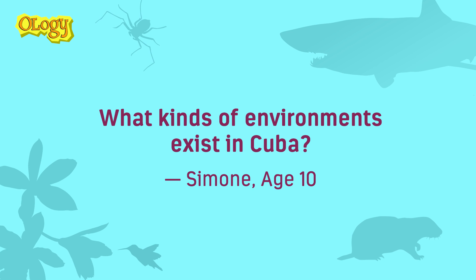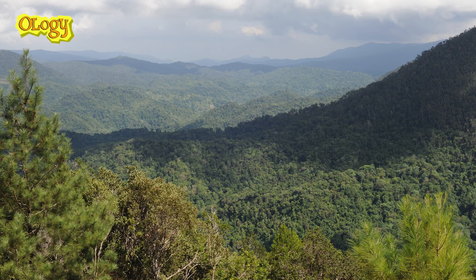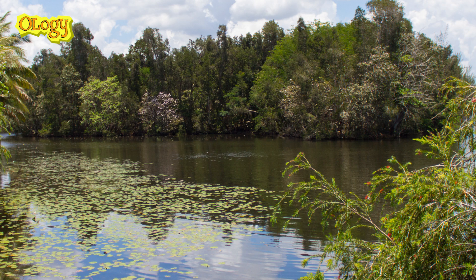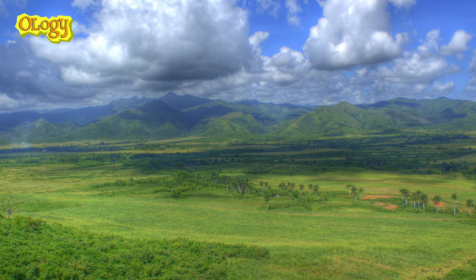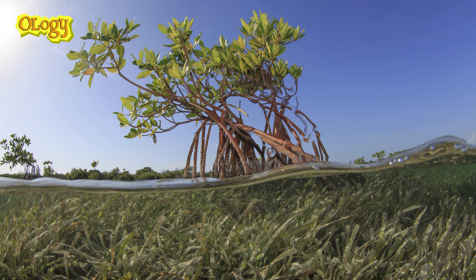What kinds of environments exist in Cuba? Cuba has many different and some unusual kinds of rocks and soils, and it also has different topography — flat areas, mountain areas, caves. Because of this, almost every ecosystem or habitat you find in the whole Caribbean can be found in Cuba: dry forests, moist forests, wetlands, grasslands, mangroves, and coral reefs.